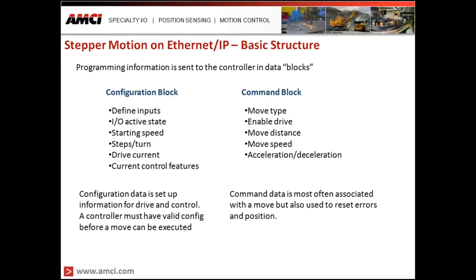The command block contains the move type, enables a drive, defines the move distance — whether an absolute or relative move — and covers the move speed and the acceleration and deceleration of the move. Commands include basic absolute and relative moves, but also resetting errors, resetting position, and if an encoder is present, resetting the encoder. All of those functions are handled in the command block.